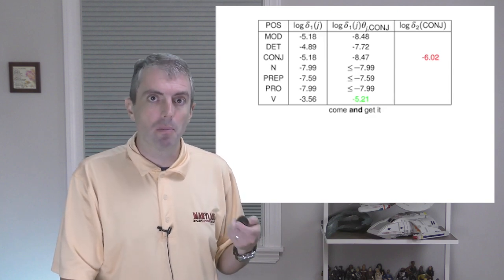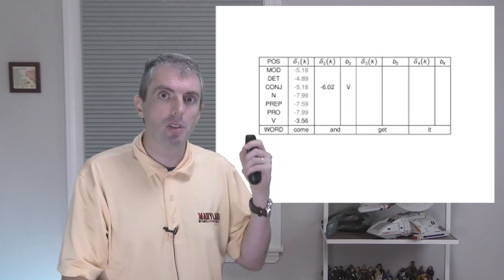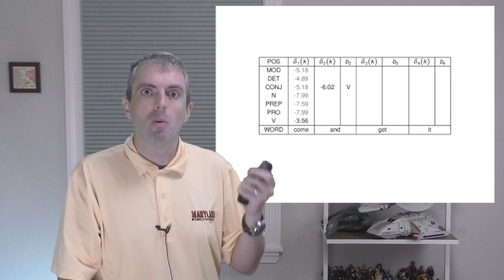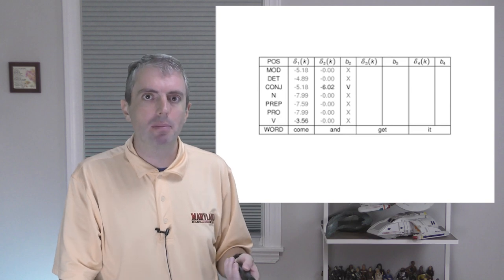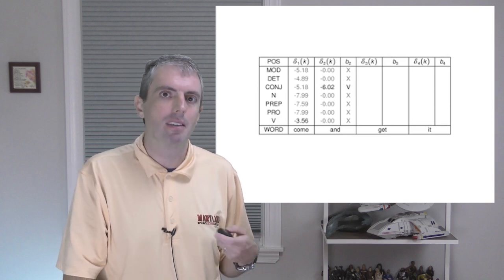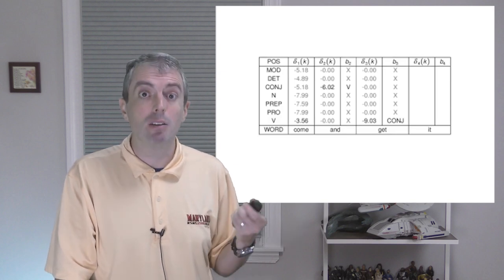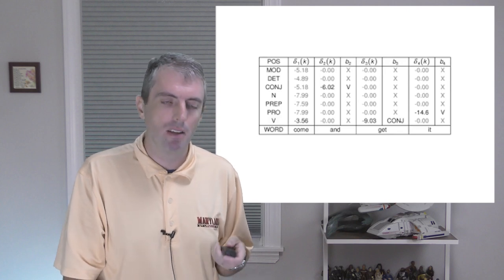Moreover, we need to record the breadcrumb for that position. When we're in the conjunction part of speech at time two, our best previous state was the verb. We continue to fill out the table at the next time step. At time three, the best part-of-speech tag to explain the sequence is the verb with the breadcrumb pointing back to the previous conjunction. And at the final time step, the best previous breadcrumb is the verb.